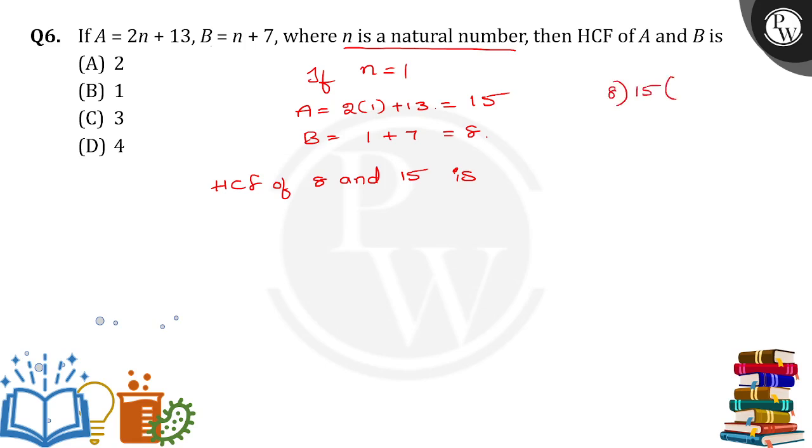8 goes into 15 how many times? One time. 8 minus 8, so the remainder is 7. 7 and then 8 will be the dividend. 7 goes into 8 one time, 7 minus 7, 1 will be there. Then again 7 will come as the dividend. 1 times 7 is 7, the remainder is 0.